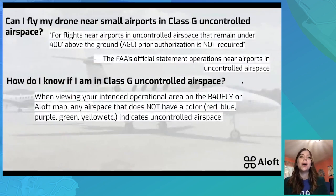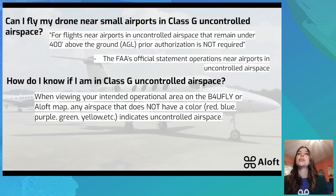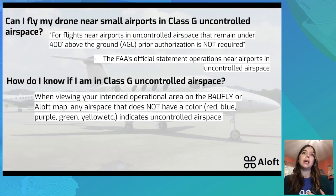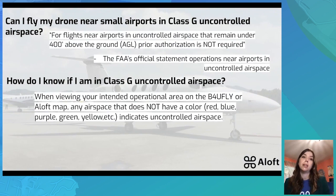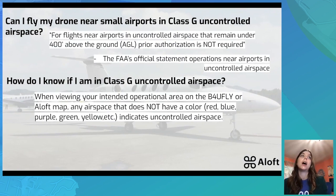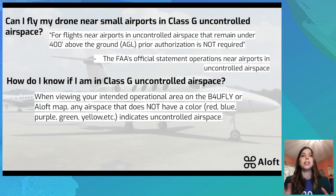Diving into the meat of this webinar: can I fly my drone near small airports in Class G uncontrolled airspace? It's a great question we get a lot, especially since launching the data submission feature in the Before You Fly app in 2020. Here is the official statement from the FAA's website: for flights near airports in uncontrolled airspace that remain under 400 feet above ground level (AGL), prior authorization is not required. That is the foundation of the answer.